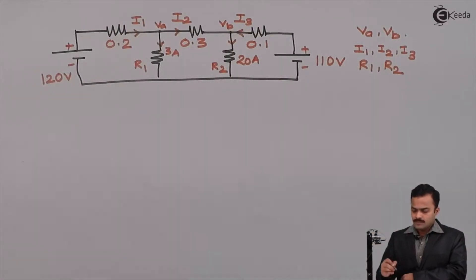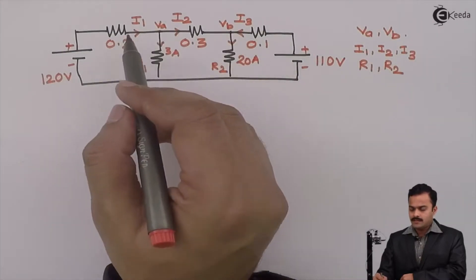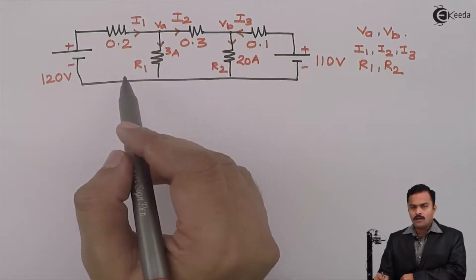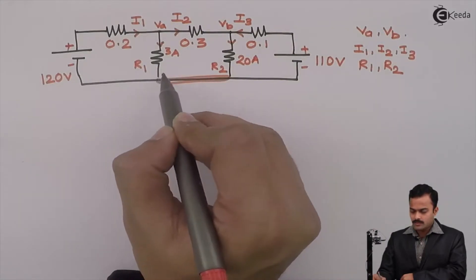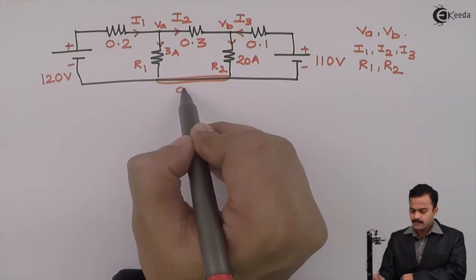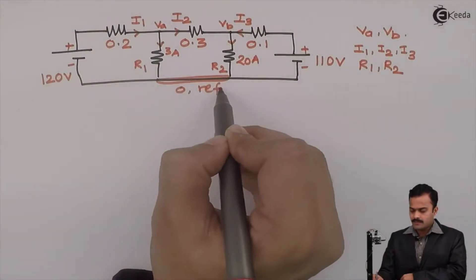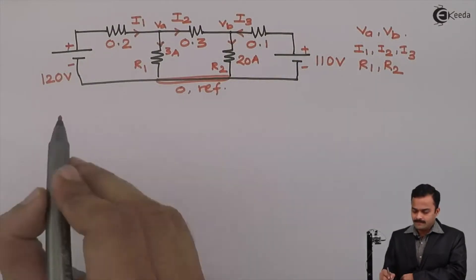Let's start. Since they have already marked nodes and currents in all the branches, only thing is that I will mark this as a reference node because 1, 2, 3, 4 branches are connected. So, I will consider this as a reference node. And directly we can apply KCL.